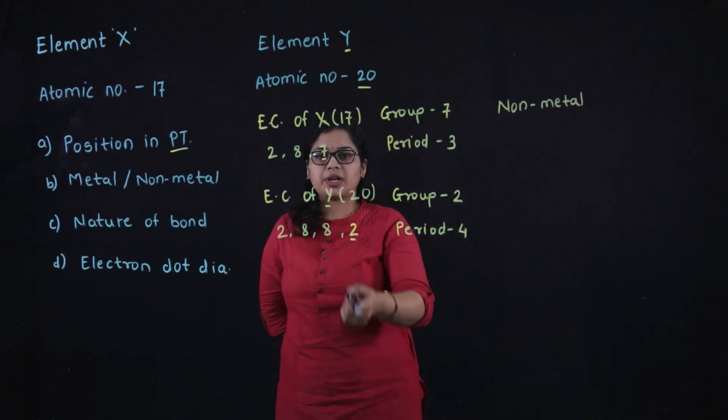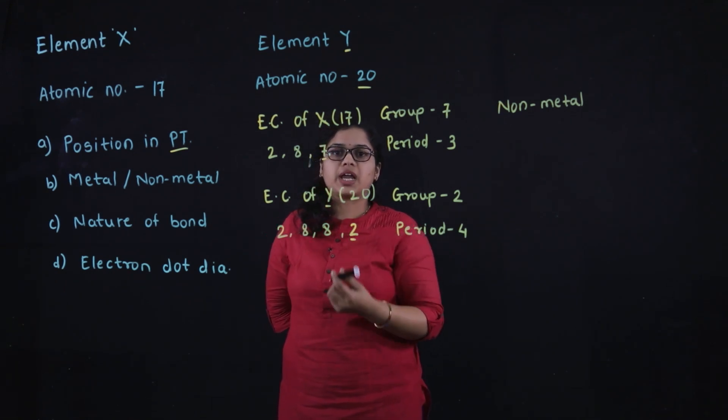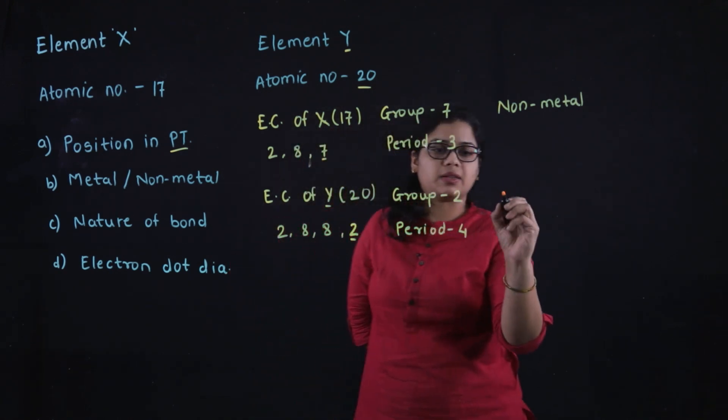For element Y, it has valence 2, and we know that elements with valence 1, 2, or 3 are metals, so Y is metal.